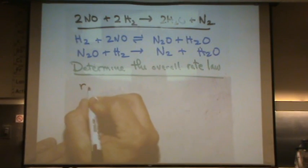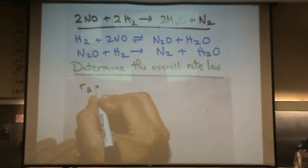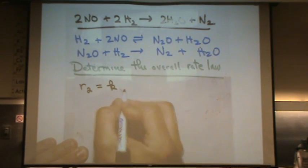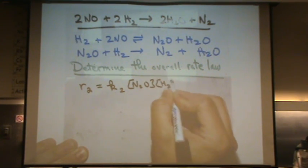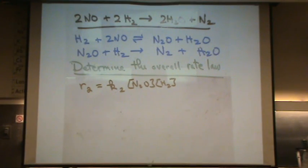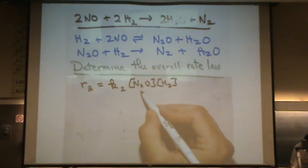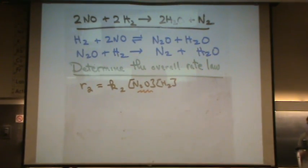So what you're going to do is say, okay, we're solving for rate two. Because that's the one that makes the products, N2O and H2. And you'd be done if this wasn't an intermediate. So you have an intermediate in your answer. You can't be satisfied.